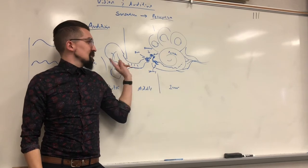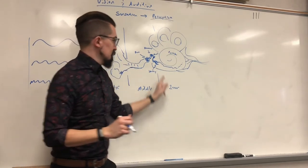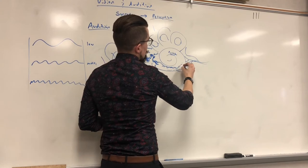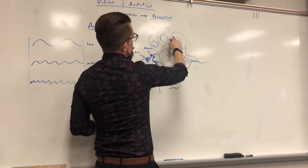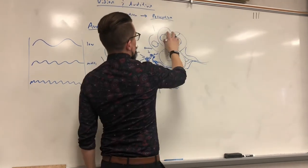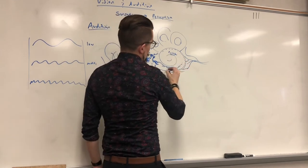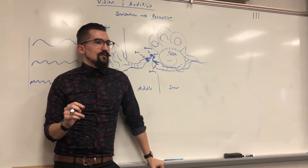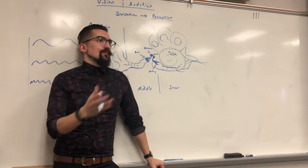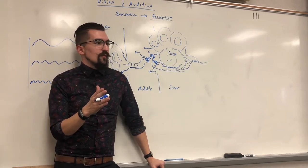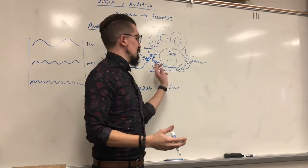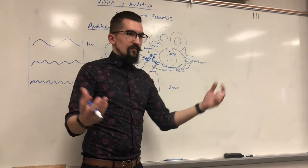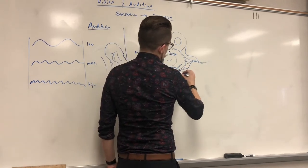So you have the same frequency coming in your ear and going into this fluid. The fluid in your cochlea vibrates, and there are tiny little hairs on the inside of your cochlea — on the basilar membrane. These hairs act just like rods and cones do: when a wave comes in, they activate depending on the sound that hits them, and that sends an electrochemical signal. It's the exact same process of transduction.